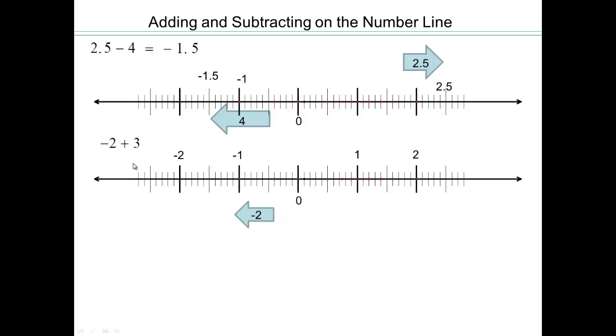So we're starting with negative 2 and add 3. So go in the same direction as 3. So that would be this way. 3 that way would be right there. So that would be 1.